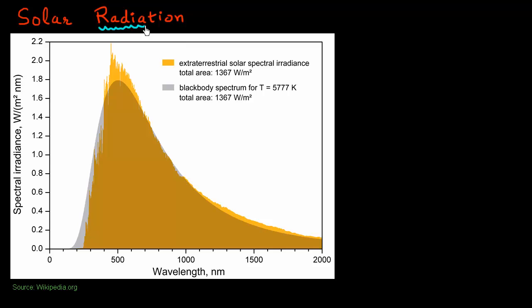Let's start by studying the radiation coming from the sun — specifically the solar radiation in space, before it hits the atmosphere of the earth, so that our study is not contaminated by the presence of atmosphere. Plotted in this chart is what is called the spectral irradiance.